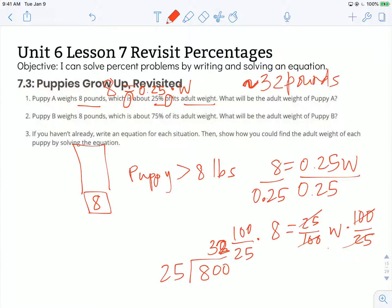Let's look at number two. Puppy B weighs 8 pounds, which is about 75% of its adult weight.